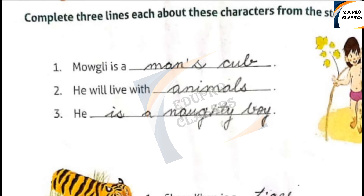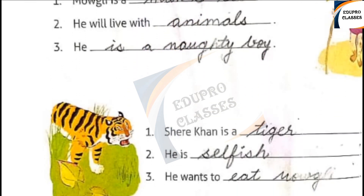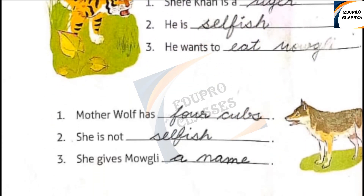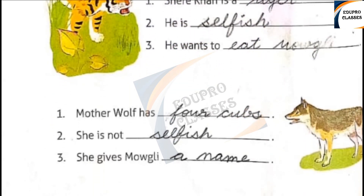Complete 3 lines each about these characters from the story. 1. Mowgli is the man's cub. He will live with animals. He is a naughty boy. 2. Shere Khan is a tiger. He is selfish. He wants to eat Mowgli. 3. Mother wolf has 4 cubs. She is not selfish. She gives Mowgli a name. Thank you.